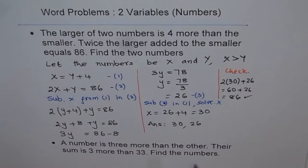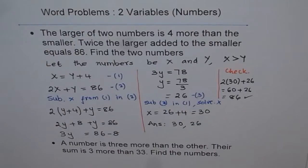Now here is one for you. It says, a number is 3 more than the other. Their sum is 3 more than 33. Find the numbers. So try this problem using the method just learned. Thank you.